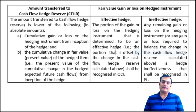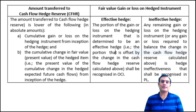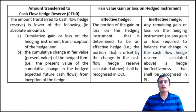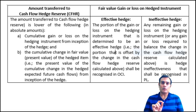When you look at the accounting for a cash flow hedge, first of all, whatever is the changes in the fair value of the hedged item or the hedging instrument, that is taken in a specific reserve which is called a CFHR — a cash flow hedge reserve. This CFHR is nothing but a part of the other comprehensive income. It will first be taken in the other comprehensive income, and from there it gets reflected in the statement of changes in equity, where the heading is called the cash flow hedge reserve.